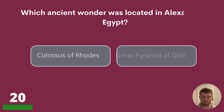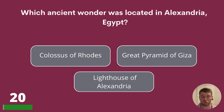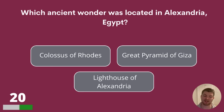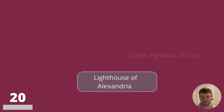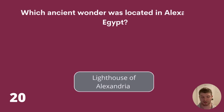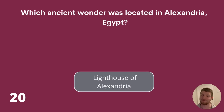Question 20. Which ancient wonder was located in Alexandria, Egypt? Colossus of Rhodes, Great Pyramid of Giza or Lighthouse of Alexandria? The answer is Lighthouse of Alexandria.